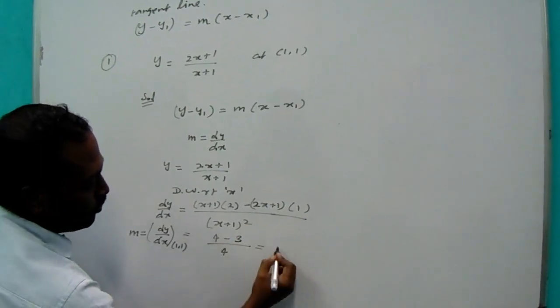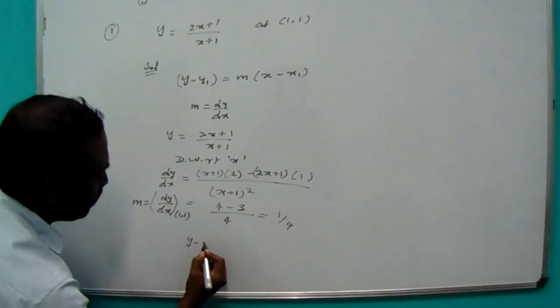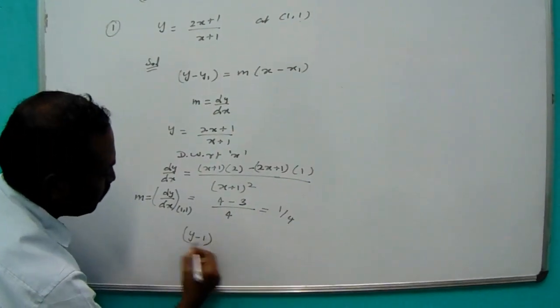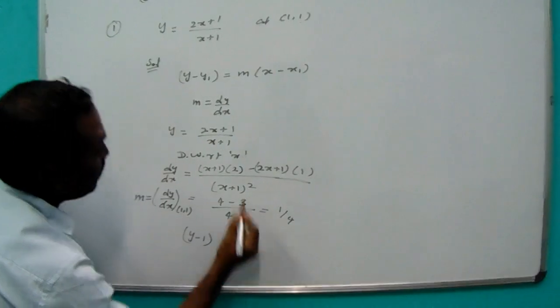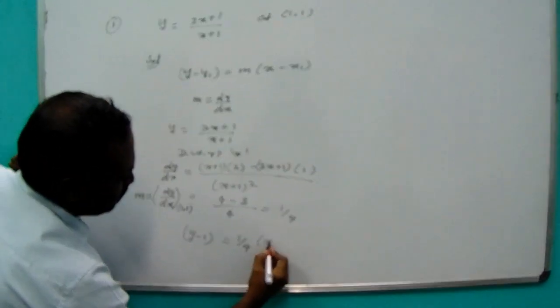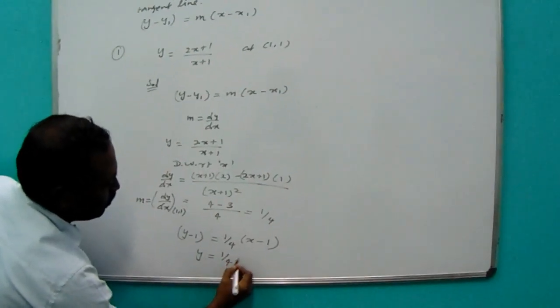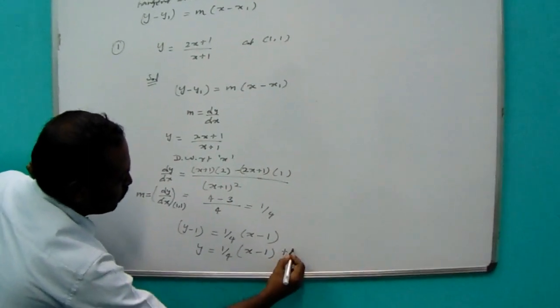Again apply y minus y1. What is the y1 value? The x1 value? y minus y1 equal to what is the m value? m value is 1 by 4. Then x minus x1 value 1. Move to one side, y is equal to 1 by 4, x minus 1 plus 1 by 4.